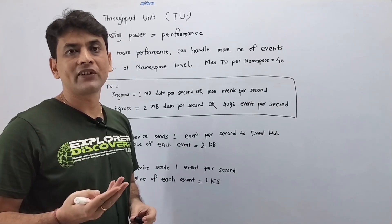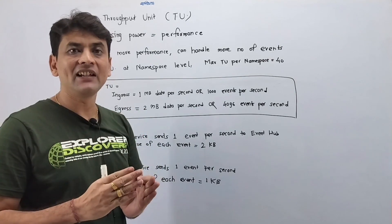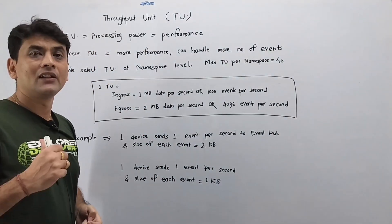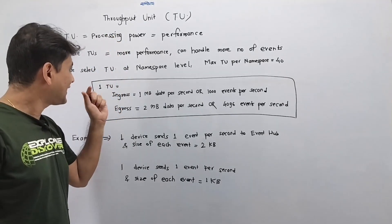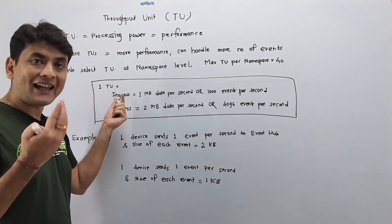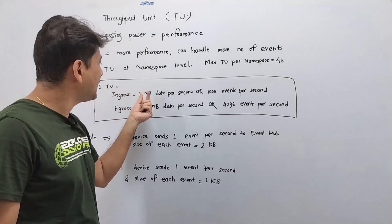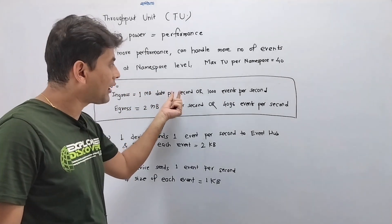So one TU, that is one throughput unit for Event Hub, can ingress—that means it can accept—1 MB of data per second or 1000 events per second, whichever comes first.